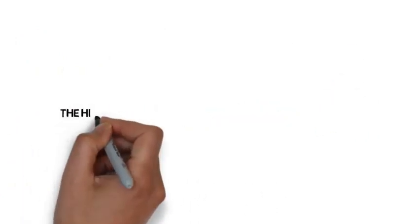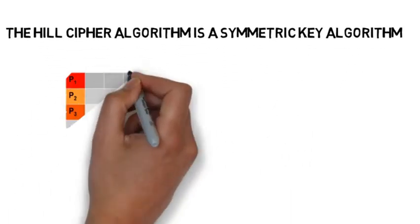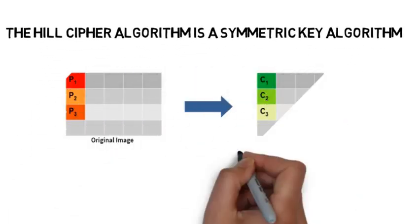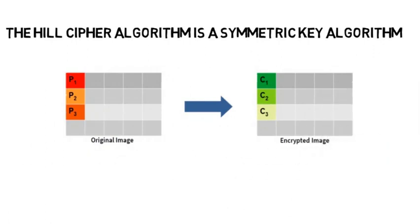Hill Cipher is a symmetric key algorithm, which means that we can get the decryption key out of the encryption one with a simple transformation. The idea behind Hill Cipher is actually pretty simple, it takes n successive plain pixels and substitutes them with n ciphered pixels, where n is the dimension of the square key matrix.